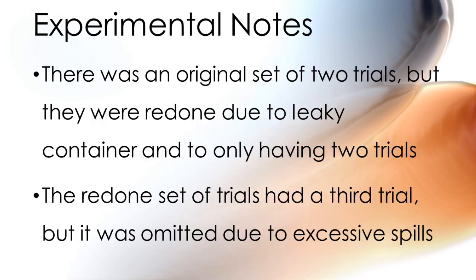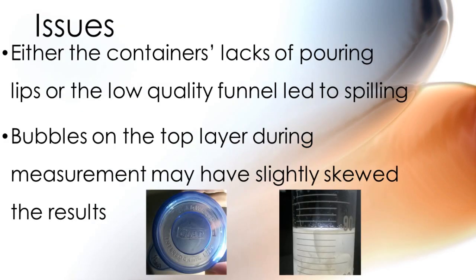There were two points of notice about this project. One is that before the final results, an original experiment was run but was redone due to having leaky containers and only two trials. The second point is that during the redone experiment, there was originally a third trial, but it was omitted from the results as there were multiple spills during recording. As for issues during the final experiment, one was that the mixtures kept spilling while being poured into the graduated cylinder, and another was that bubbles kept forming on top of the top layer, which may have made it hard to read how tall that layer actually was.